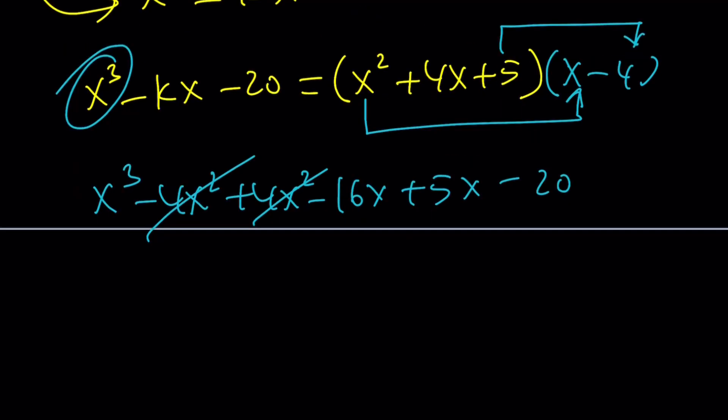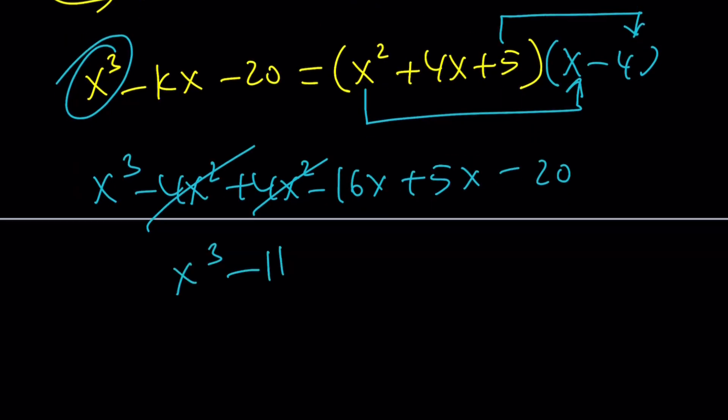The 4x squared cancels out. x cubed minus 11x minus 20 equals x cubed minus kx minus 20. From here, we get k equals 11.